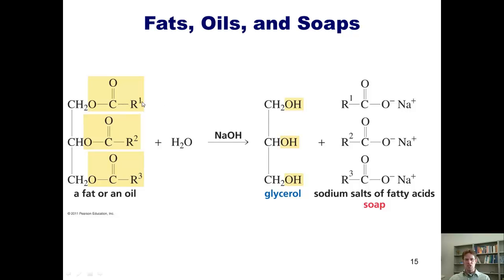If you have more branching in these R groups, then it tends to contribute to it being a liquid more. And if you have short R groups here, then it becomes more and more likely that it will be a liquid.